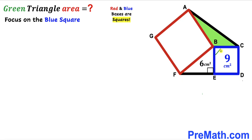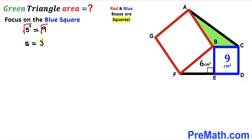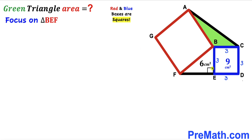Let's focus on the blue square BCDE. The area is given as 9 cm². Recalling the area of a square formula, Area = S², and taking the square root on both sides, the side length of the blue square is 3 cm. So all sides of the blue square are 3 cm.